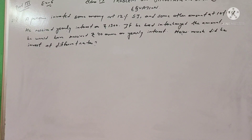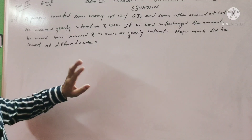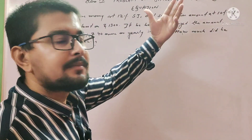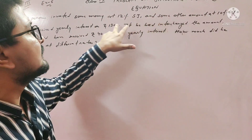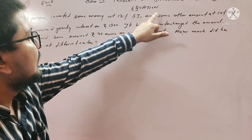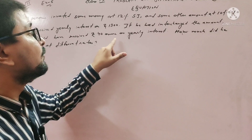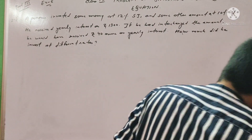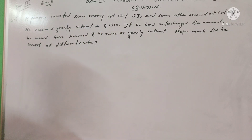In class 9, this is your part 3 video from exercise 6, problem on simultaneous linear equations. Question number 21: a person invested some money at 12% simple interest and some other amount at 10% simple interest. He received yearly interest of rupees 1300. If he interchanges the amount, he would have received rupees 40 more as yearly interest. How much did he invest at each rate?